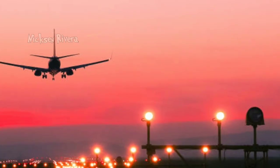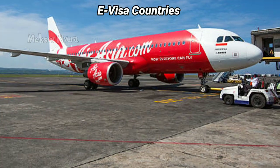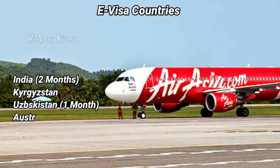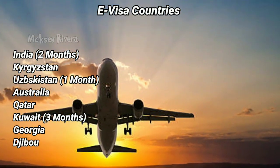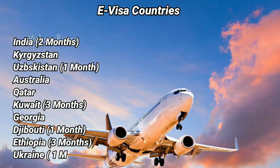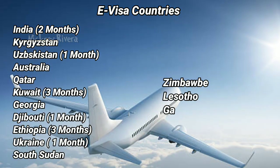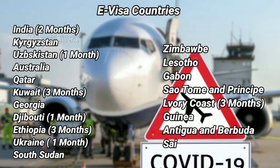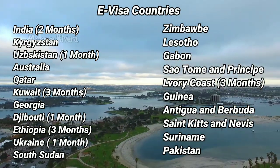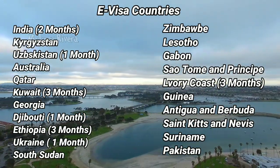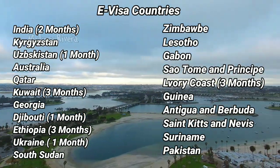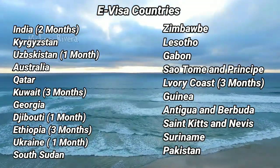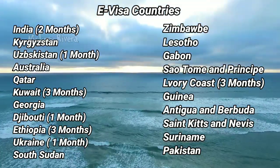There are 21 countries that allow e-visa access to Cambodians: India, Kazakhstan, Uzbekistan, Australia, Qatar, Kuwait, Georgia, Djibouti, Ethiopia, Ukraine, South Sudan, Zimbabwe, Lesotho, Gabon, Eswatini, São Tomé and Príncipe, Ivory Coast, Guyana, Antigua and Barbuda, Saint Kitts and Nevis, Suriname, and Pakistan.